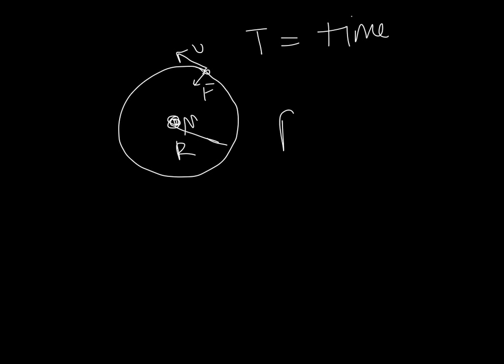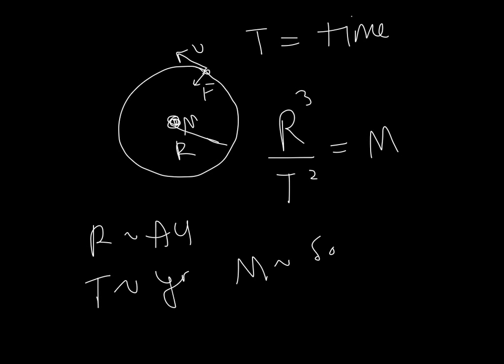The relationship is that the radius of the orbit cubed, divided by the period of the orbit squared, is equal to the mass. And again, that's assuming that R is measured in astronomical units, that T is measured in years, and that mass is measured in solar masses.